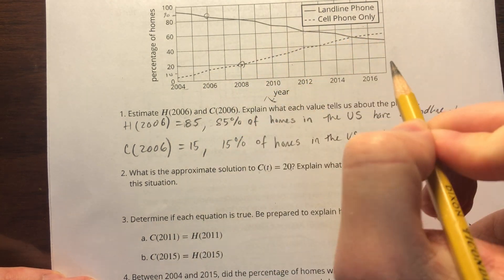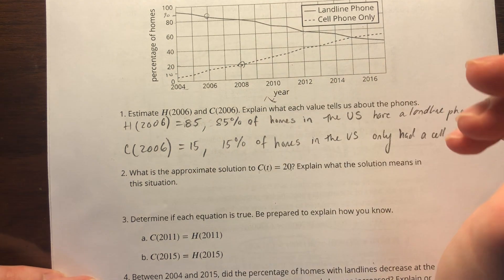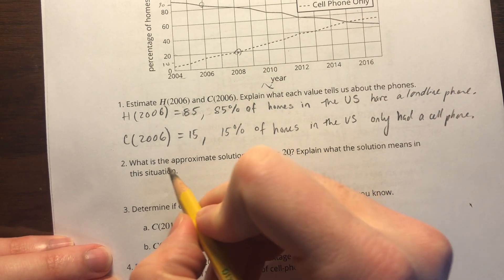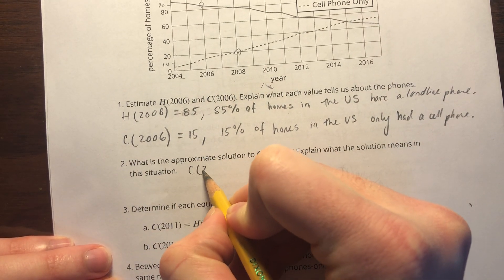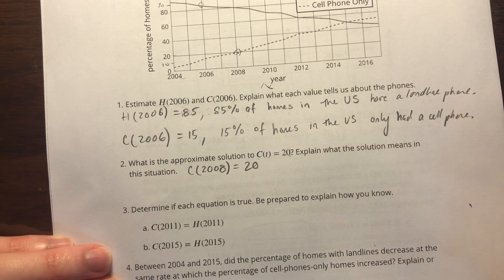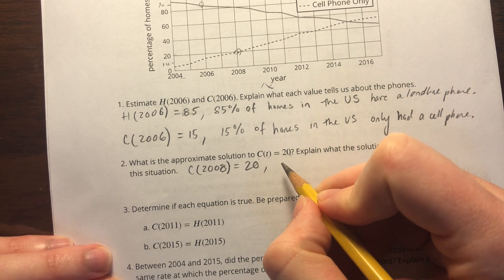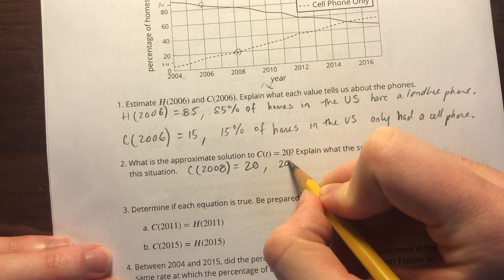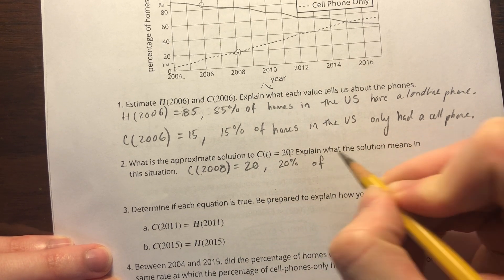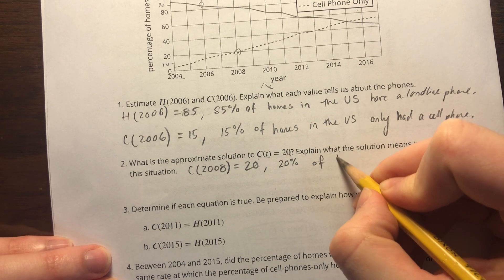I can see that right about here, I would guess about 2008. So C(2008) = 20, and that means that 20% of households in the U.S. only had cell phones in 2008.